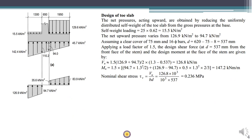Now let's start with the design of the toe slab. This is a basic design of a one-way cantilever slab. We have to find out the bending moment, design bending moment, as well as design shear force. From this diagram we can interpolate the value — here it is 142.4 kN/m², which is Q max. We can also interpolate the value of Q at the position corresponding to the beginning of the toe slab. The toe slab is made of concrete with a depth of 0.62 m, which means it exerts a self-weight pressure of 15.5 kN/m². There is a net upward force acting on the toe slab.